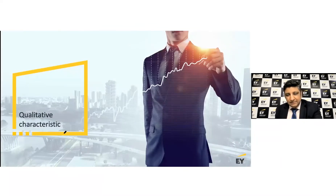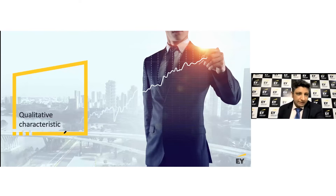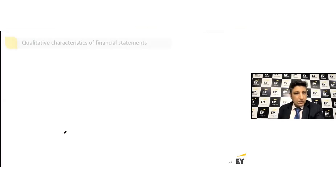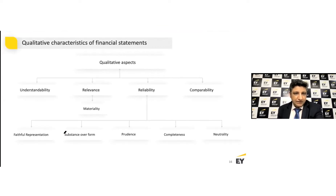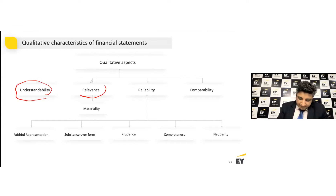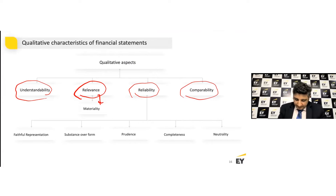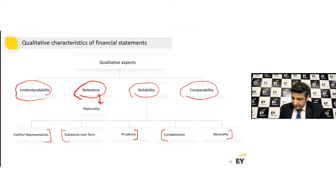The next section is a little conceptual and theoretical, but we talk about the qualitative characteristics. We won't be spending a lot of time on that. We talk about understandability; relevance, which includes materiality; reliability; and comparability. Within the reliability perspective: faithful presentation, substance over form, prudence, completeness, neutrality, and all these aspects involved.